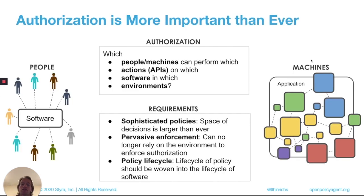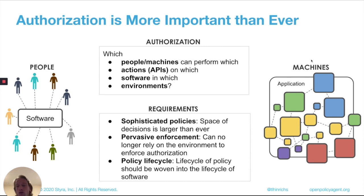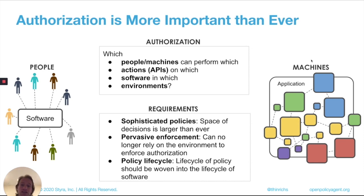While there are a whole bunch of different aspects of security we could focus on today, we're going to look at authorization. Authorization is a problem within security of controlling which actions are allowed to be taken. There are a whole bunch of different dimensions to that — which people or which machines can perform which actions, which APIs on which software, in which environments, maybe at what time of day, or based on what kinds of attributes on resources.